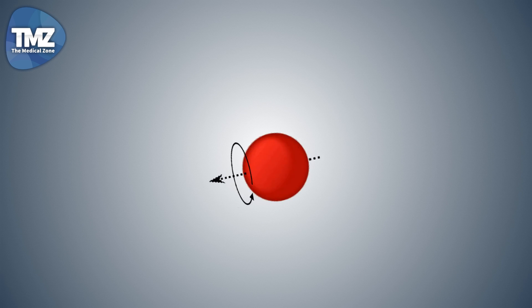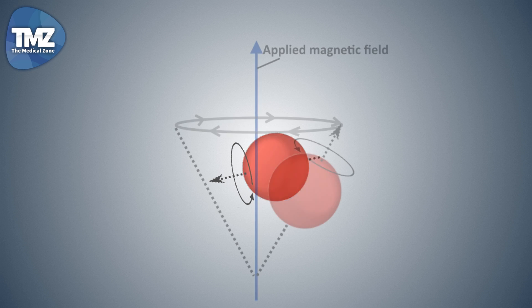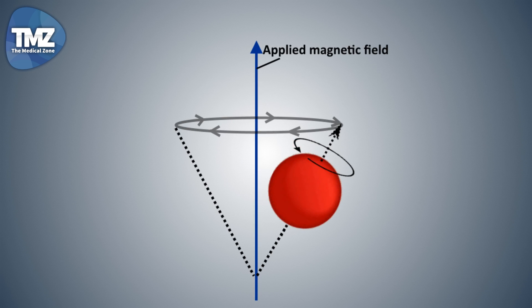So let's have a look at a single proton. Here you can see it's pointed in a random direction. Now when the magnetic field is applied, the axis of the proton will spin around this field vector, and this is called precession.